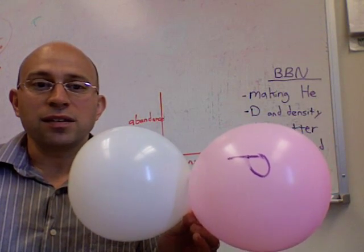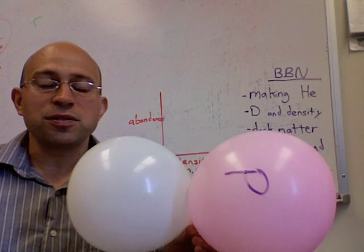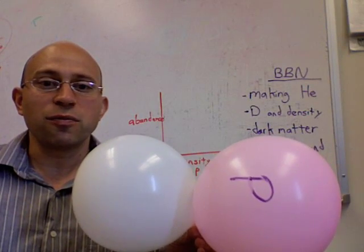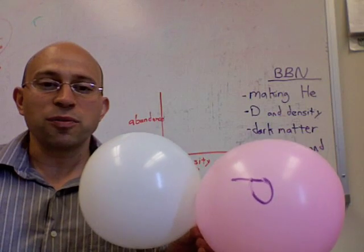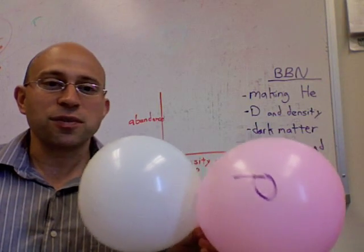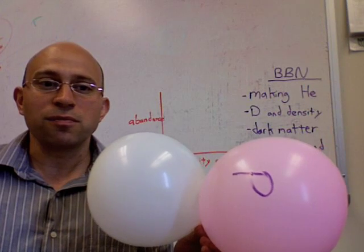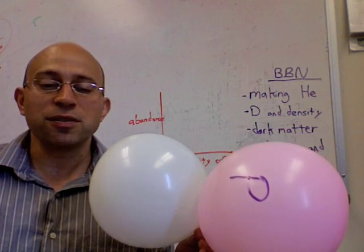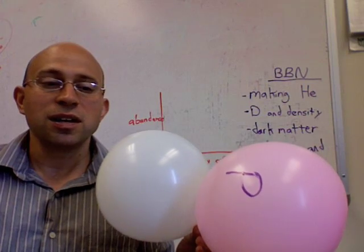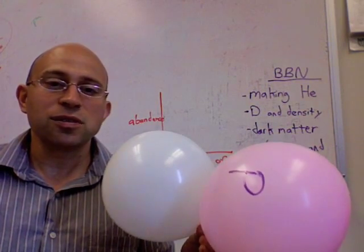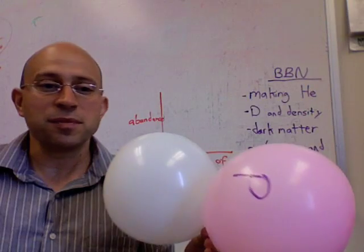It turns out that the amount of deuterium left over depends on the overall density of protons and neutrons. If there's a very high density it's going to be easy for almost all the deuteriums to find partners and make heliums. If it's a low density there's going to be a fair amount of deuterium left over that hasn't found partners.